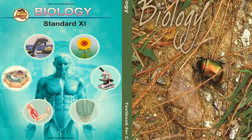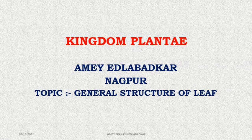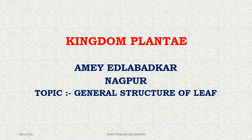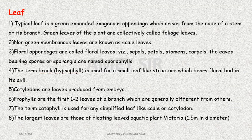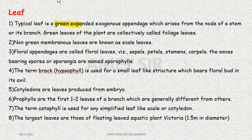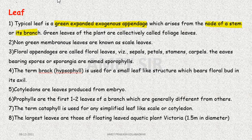Hello students. In this video, another important vegetative organ of the plant — the leaf — will be discussed. It is the most important vegetative organ as it is involved in the process of photosynthesis and different other functions. A typical leaf is a green, expanded, exogenous appendage produced at the node of a stem or its branch.